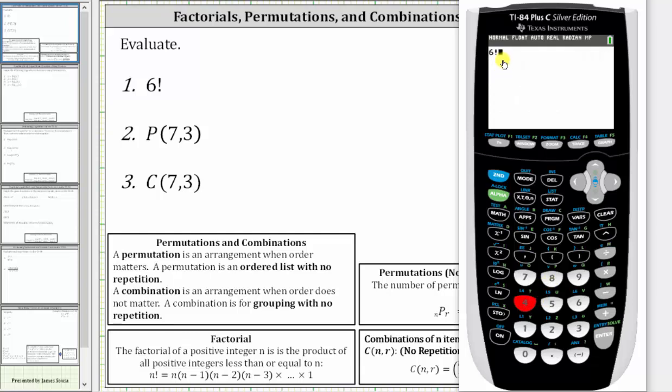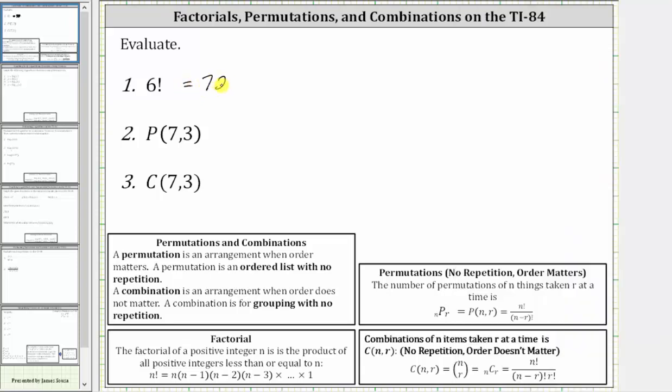Notice now we have six factorial, we press enter. Six factorial is equal to 720. Next, we have seven permute three, which also can be written using the notation seven permute three.